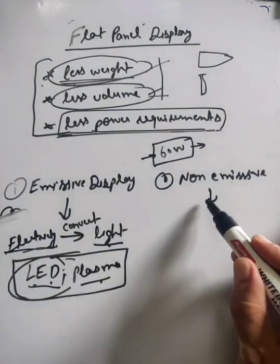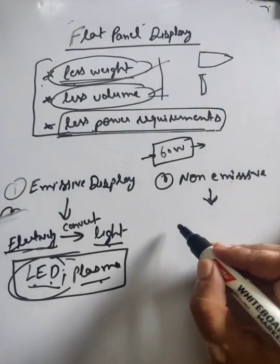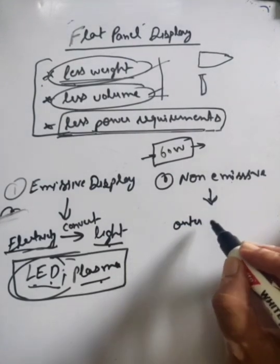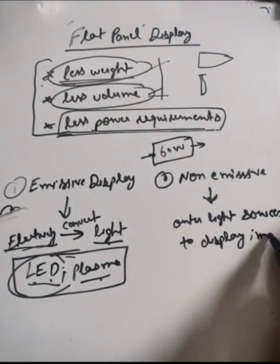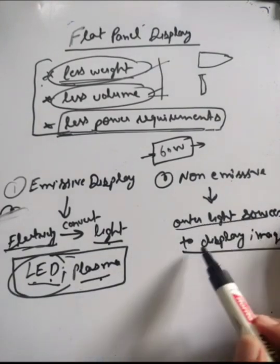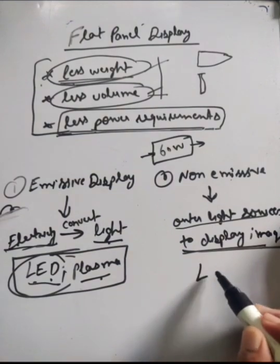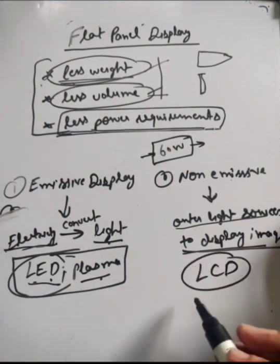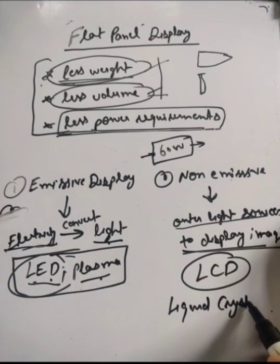But it is a non-emissive display. What is the difference? These use outer sources - outer light sources to convert the image. For example, the main example - LCD, liquid crystal display.